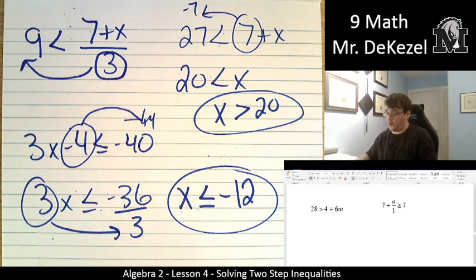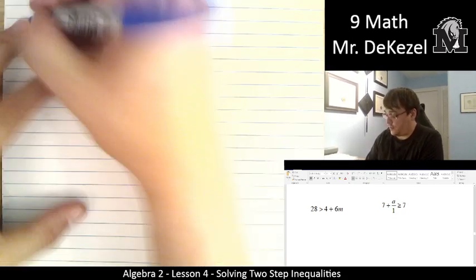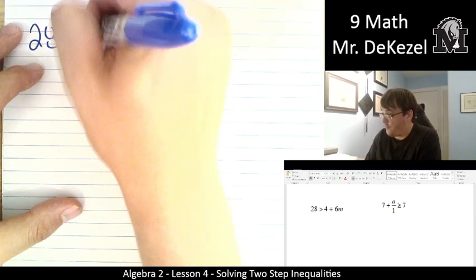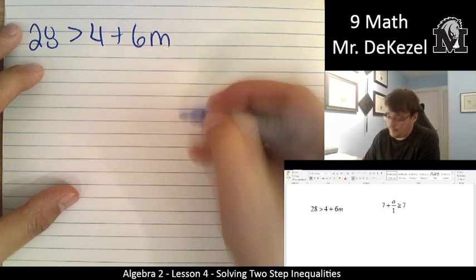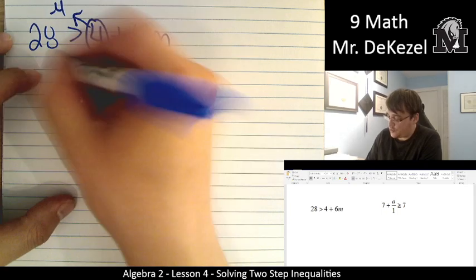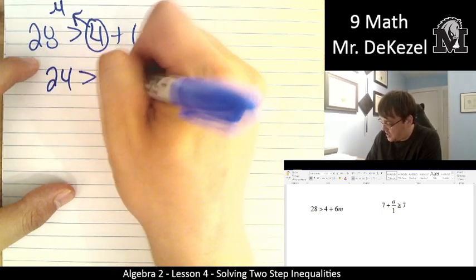We have two more problems to do. Let's go. We have 28 is greater than 4 plus 6m. We are isolating the m. So let's move the 4 over. Minus 4 on that side. 28 minus 4 is 24. That's greater than 6m.